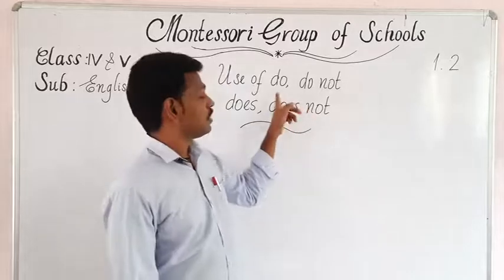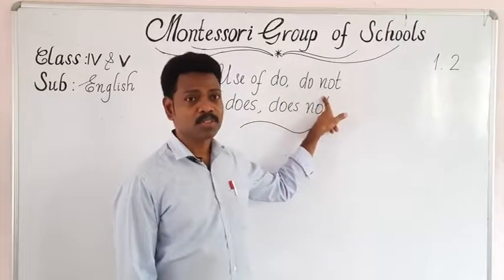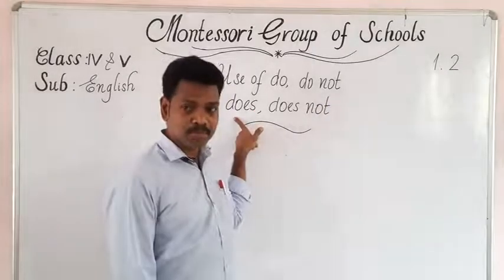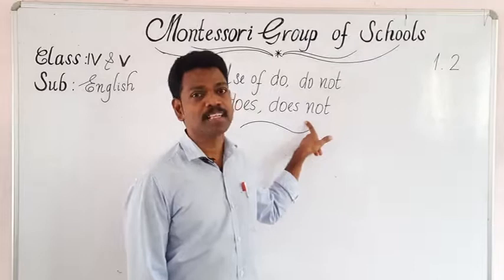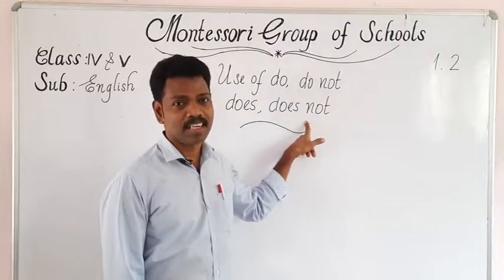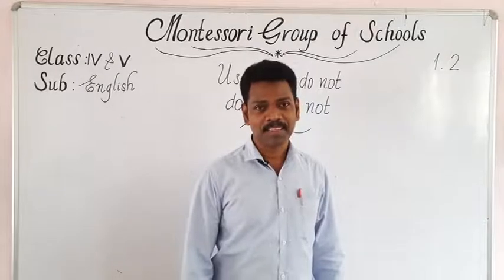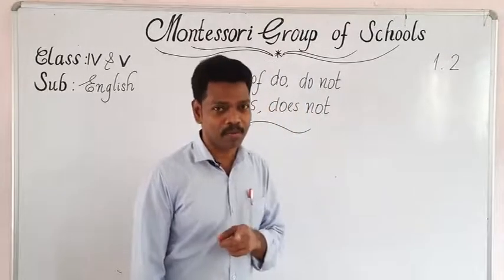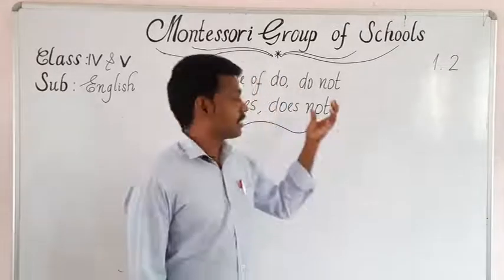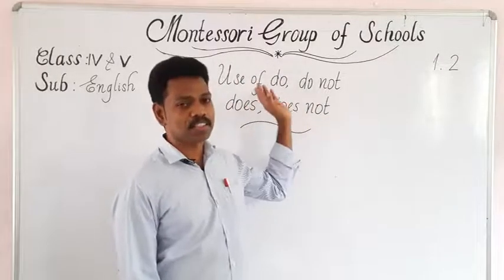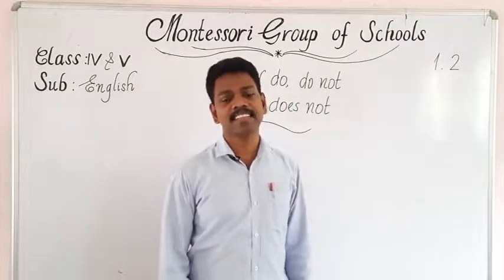For example: do you go to school? I don't know. Does he come to school? He does not read well. These are the words we use a lot in our daily life in English. Now let's get into the details of the use of do, do not, does, and does not.